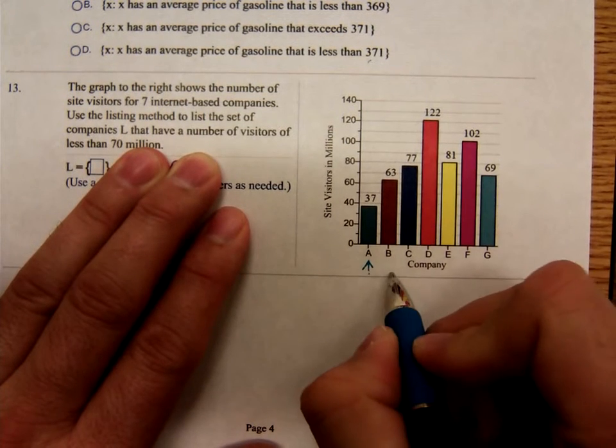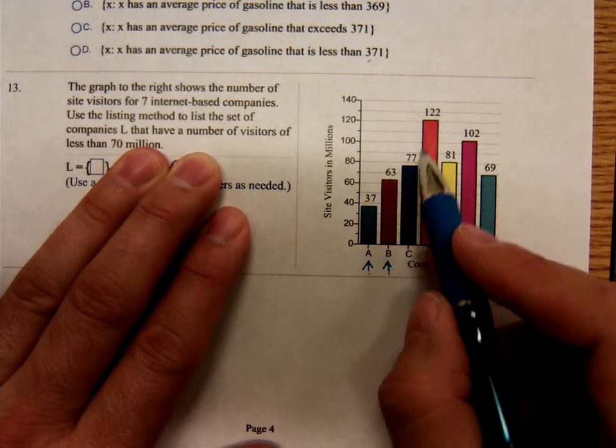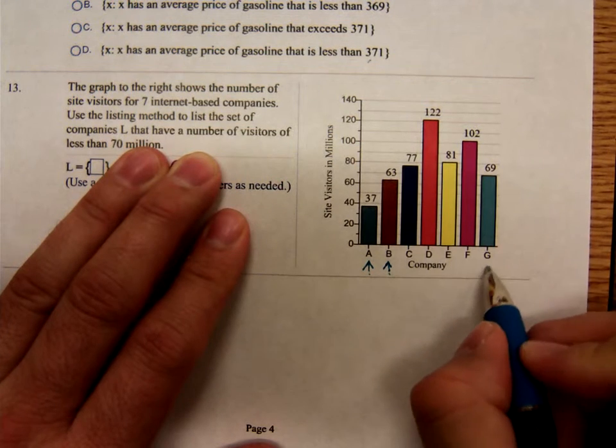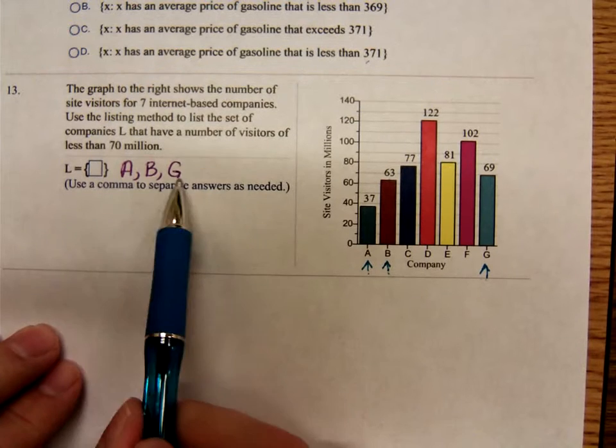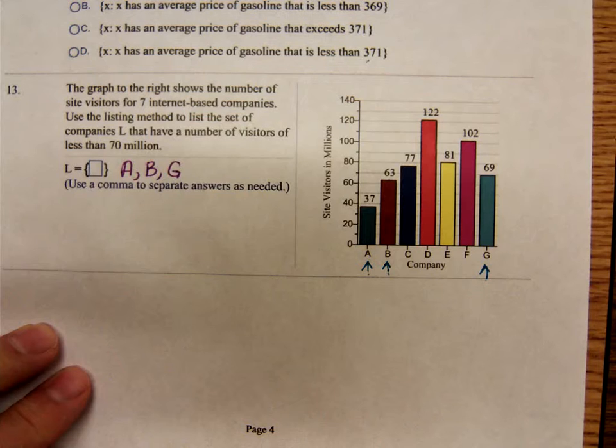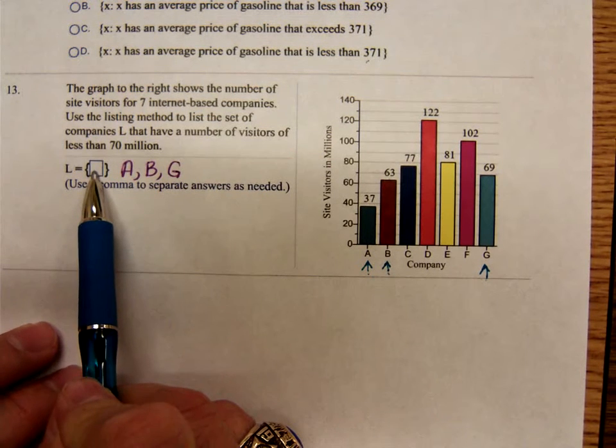A. B is 63 million. Nope, not less than 70, not less, not less, not less. G. A, B, and G are the ones that have site visitors less than 70 million. You'll type that in this box when you're doing it.